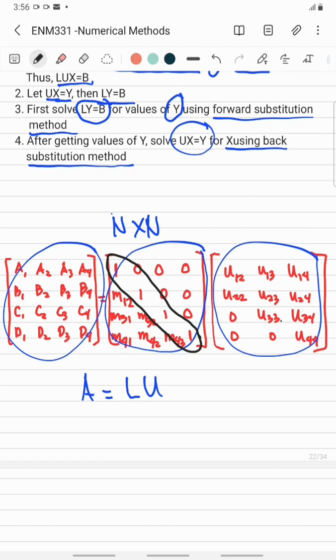For the upper triangular matrix U, below the main diagonal, you have zeros as entries of elements. Above the main diagonal, you have non-zero elements.